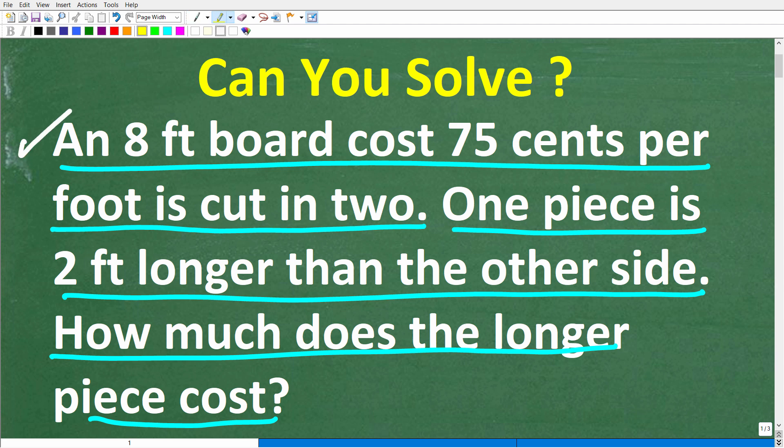All right, now before I show you the answer, let's take another quick look at the problem. So an 8-foot board costs $0.75 per foot is cut into two pieces. The longer piece is two feet longer than the shorter piece. So how much does the longer piece cost?